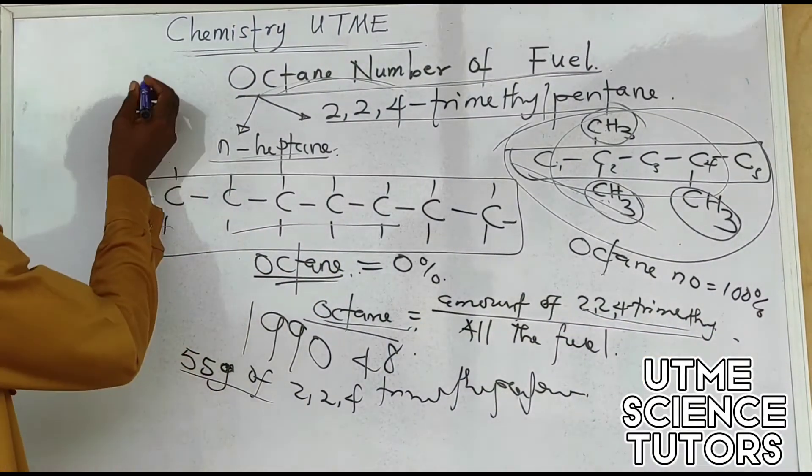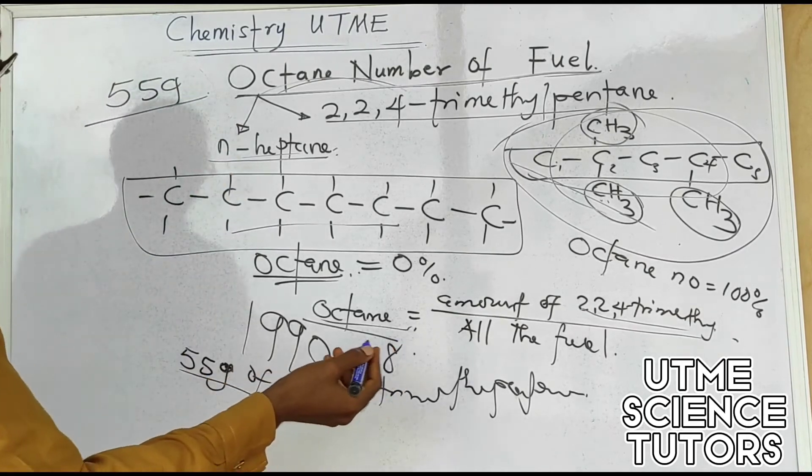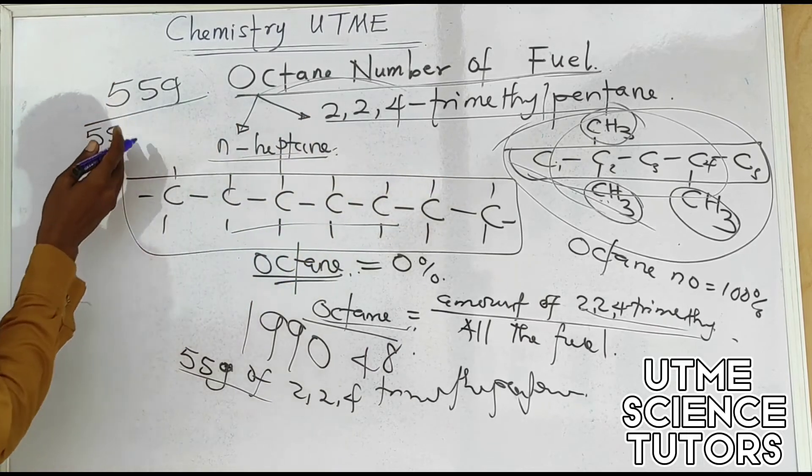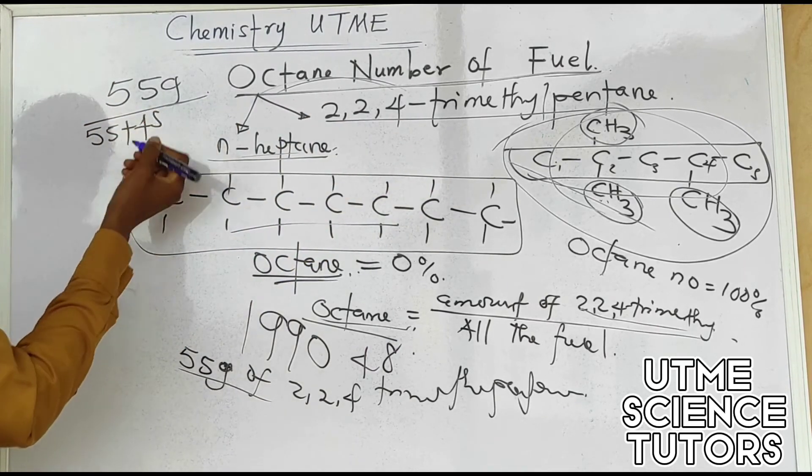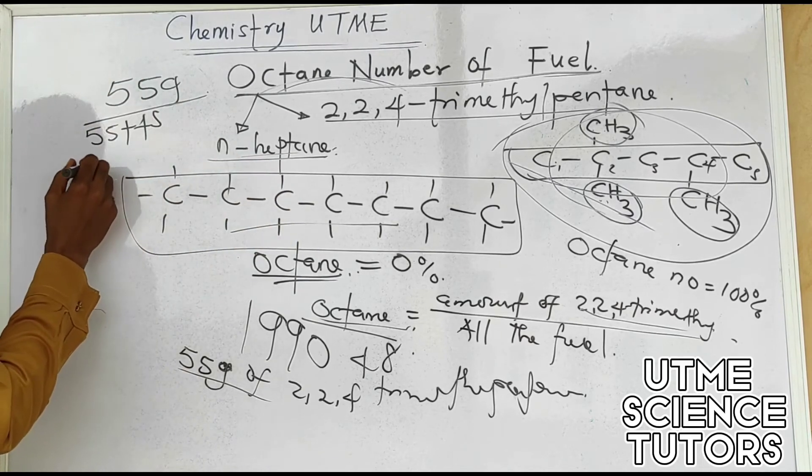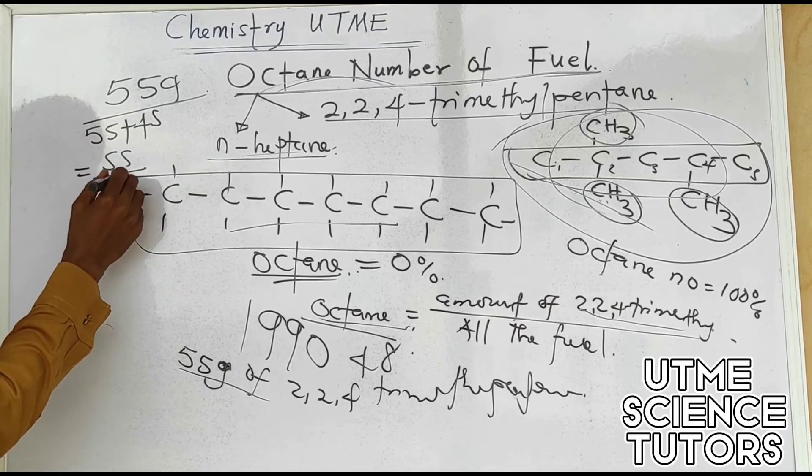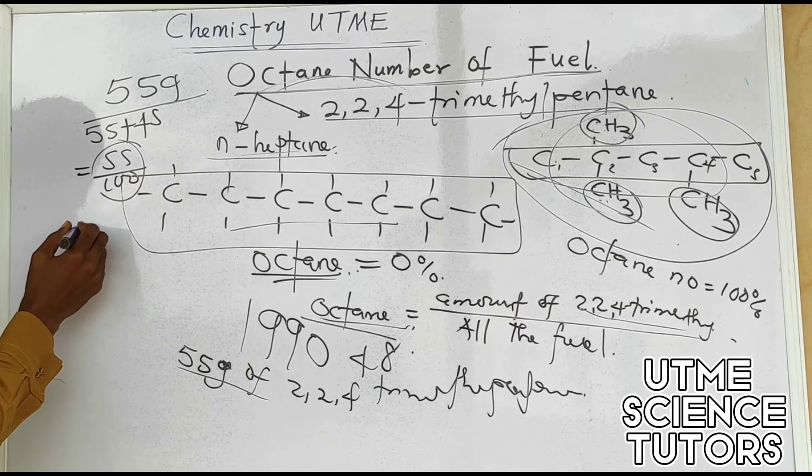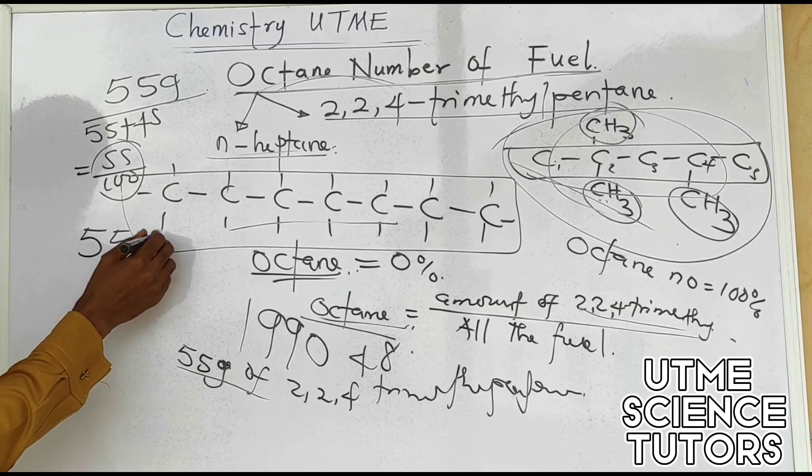Then divided by what is everything: everything will be 55 grams of the 2,2,4-trimethylpentane and 45 grams of n-heptane. So the answer is going to give us 55 divided by 45 plus 55, which is 100. So anything divided by 100 is percent. Therefore, the octane number of such petrol is 55 percent.